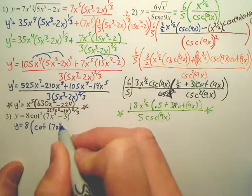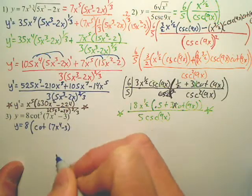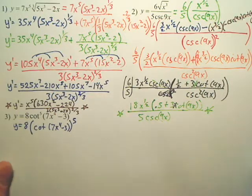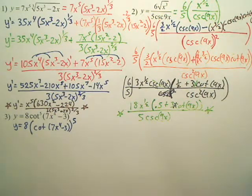Now, cotangent 7x to the 4th minus 3, all that to the 5th. That is the first thing you probably want to do, is rewrite it so it looks like something that you'd be chaining.